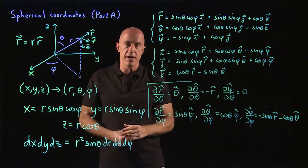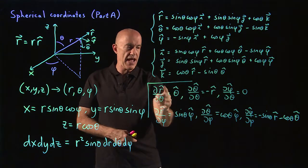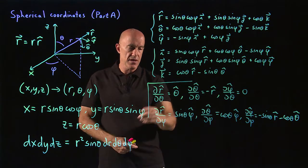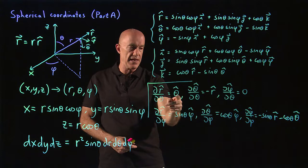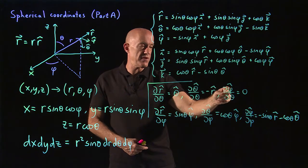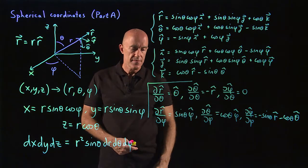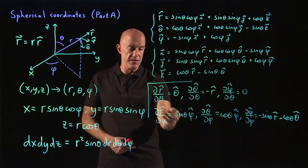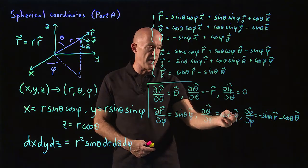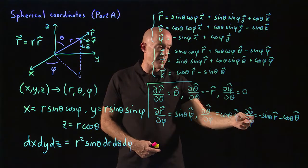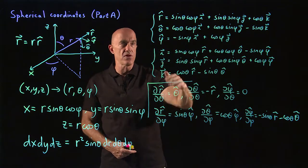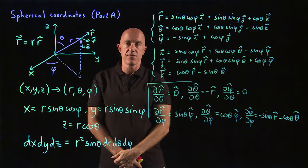So here are the derivatives of the unit vectors. r-hat, theta-hat, and phi-hat depend on both theta and phi, so we need partial derivatives. The partial derivative of r-hat with respect to theta is theta-hat. The partial derivative of theta-hat with respect to theta is minus r-hat. The partial derivative of phi-hat with respect to theta is zero. The partial derivative of r-hat with respect to phi is sine theta phi-hat. The partial derivative of theta-hat with respect to phi is cosine theta phi-hat. And the partial derivative of phi-hat with respect to phi is minus sine theta r-hat minus cosine theta theta-hat. You can derive all of these from the expressions for the unit vectors.